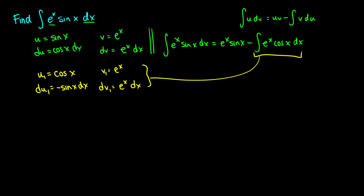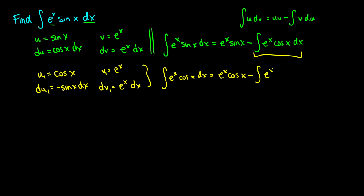For the antiderivative of e to the x dx, we get e to the x. Now let's rewrite this. The integral of e to the x cosine x dx is going to be u1 times v1 — so that's e to the x cosine x — minus the integral of v1 times du1, which is minus the integral of e to the x times negative sine x dx. Don't forget the negative sign here, because du1 equals negative sine x and that negative has to come with us.